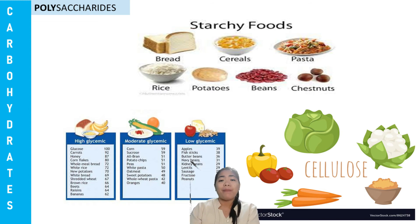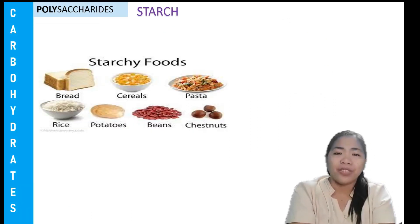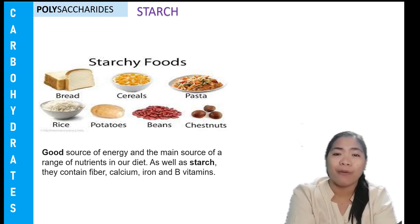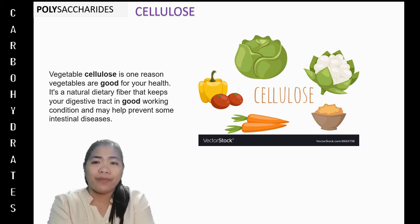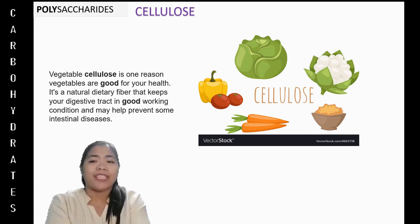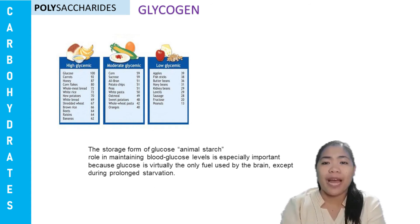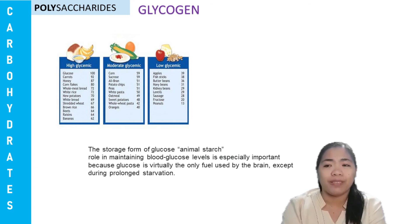The following are examples of polysaccharides. Starch contains fiber, calcium, iron, and B vitamins. They are a good source of energy and the main source of a range of nutrients in our diet. Cellulose is one of the reasons why vegetables are good for your health. It's a natural dietary fiber that keeps your digestive tract in good working condition and may help prevent some intestinal disease. Glycogen, the storage form of glucose or animal starch, plays a role in maintaining blood glucose levels, which is especially important because glucose is virtually the only fuel used by the brain except during long starvation.